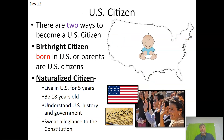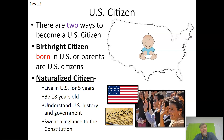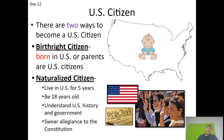There are two ways to become a citizen. Birthright citizenship applies to people born in the U.S. or whose parents are U.S. citizens. Naturalized citizens go through a process: you must live in the U.S. for five years, be at least 18 years old, understand U.S. history and government by passing a test with ten questions drawn from a hundred possible questions, and swear an allegiance to the Constitution.